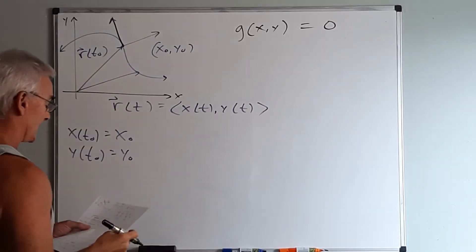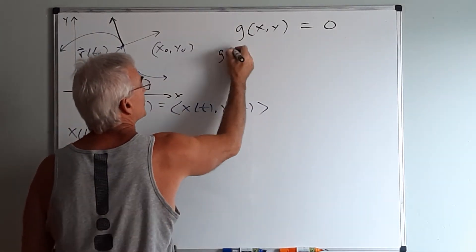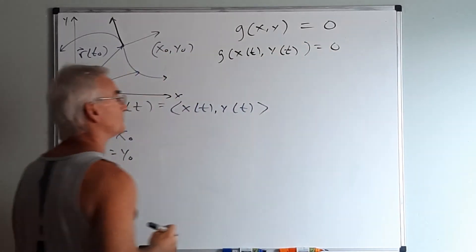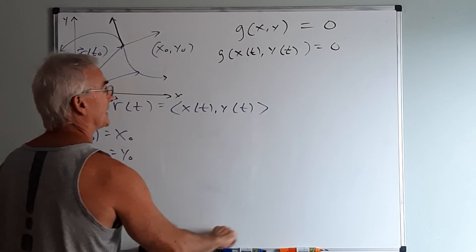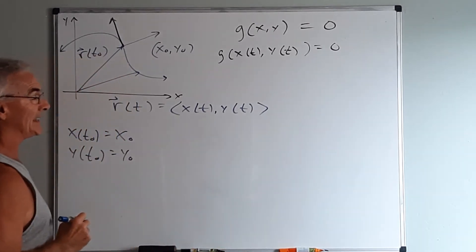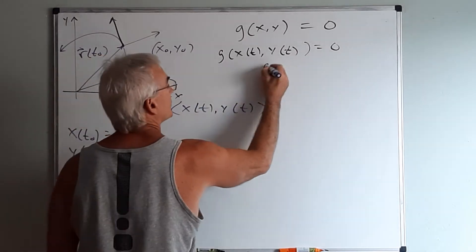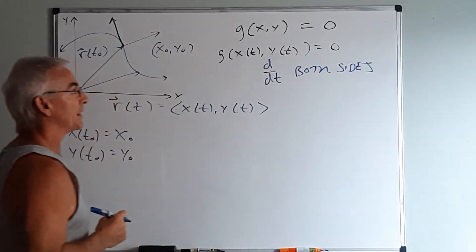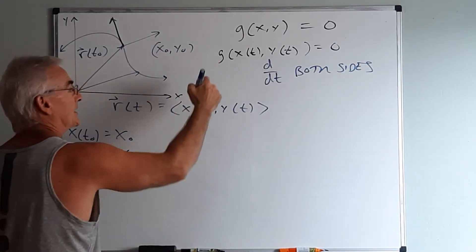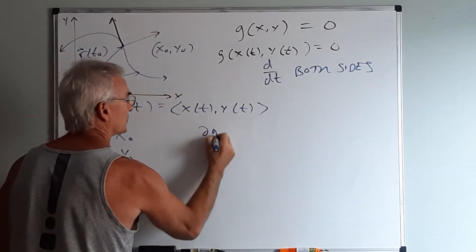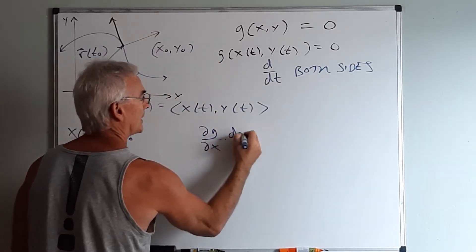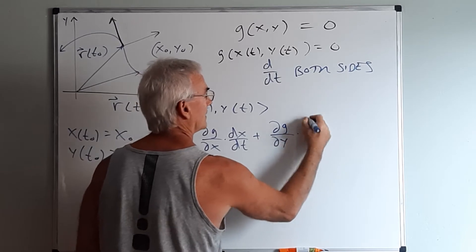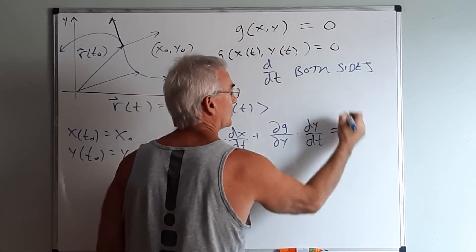And the way we'll do that is that we will restate this as g of x of t, y of t equal to zero. Now when I take that quantity and I differentiate it with respect to t, now we can use the chain rule. I want to d dt both sides because right now there's only one independent variable and that would be t. So using the chain rule that would become the partial of g with respect to x times dx dt plus the partial of g with respect to y times dy dt and that would all equal to zero.